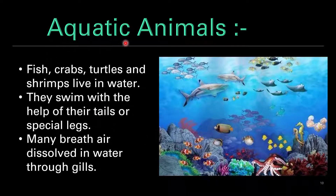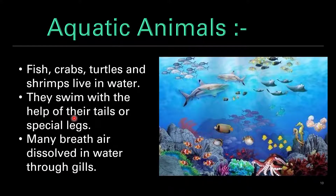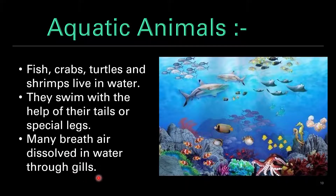Now let's talk about aquatic animals. Fish, crabs, turtles and shrimps live in water. They swim with the help of their tails or specialized legs. Many breathe air dissolved in water through gills.